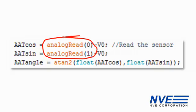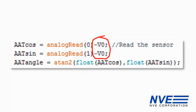We read the two angle sensor outputs here. The sensor is running on a single supply, so we subtract the offset V0, typically half the supply.